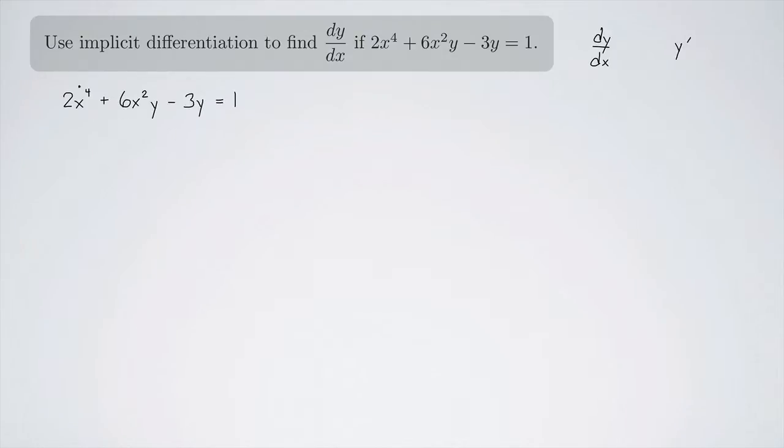We'll go term by term. First we have 2x^4. There's no y in here, so you just take the derivative like you normally would. In this case, bring down the 4, multiply it by the 2, and I end up getting 8x^3.